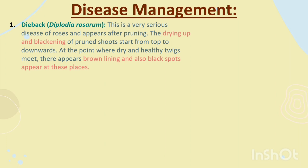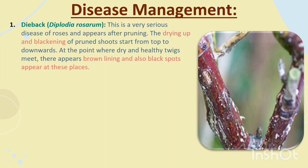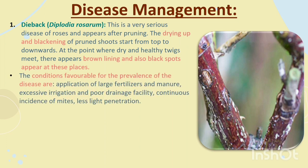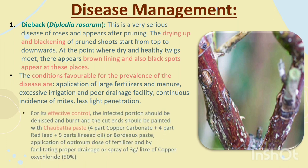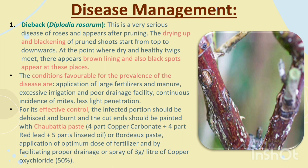Disease Management. Dieback (Diplodia rosarum): a very serious disease of roses, appearing after pruning. The drying up and blackening of pruned shoots starts from top downwards. At the point where dry and healthy tissues meet, brown lining appears and black spots form. Conditions favourable for the disease include application of large doses of fertilizers and manure, excessive irrigation and poor drainage, continuous mite incidence, and less light penetration. For control, the infected portion should be excised and burnt, and the cut end painted with Bordeaux paste (4 parts copper carbonate + 4 parts red lead + 5 parts linseed oil), or body of paste application, and optimum doses of fertilizer with proper drainage, or spraying copper oxychloride 3 g per litre of water with 50% wettable powder.